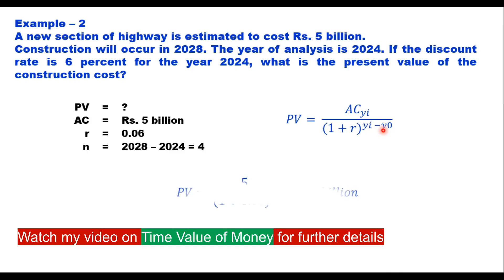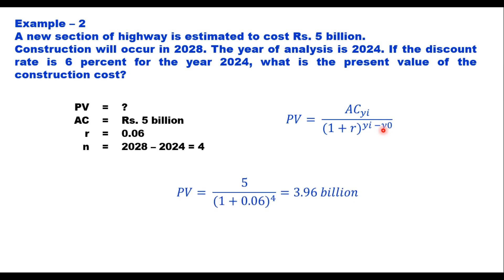So AC is 5 billion. And R is 0.06. And this difference in the period is 4 years. So this is 3.96 billion.